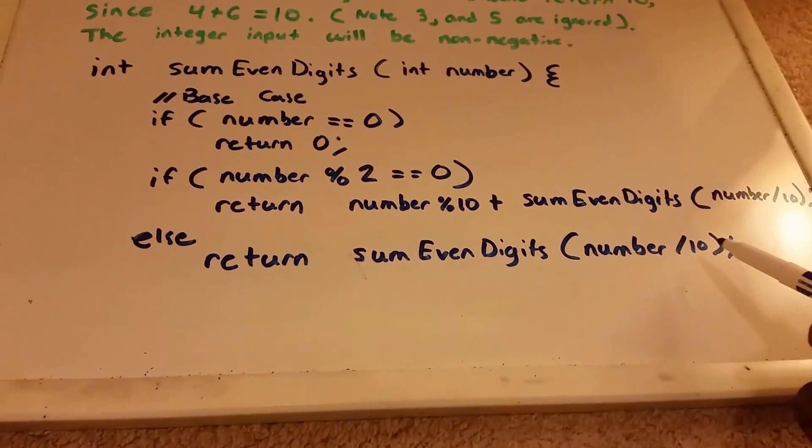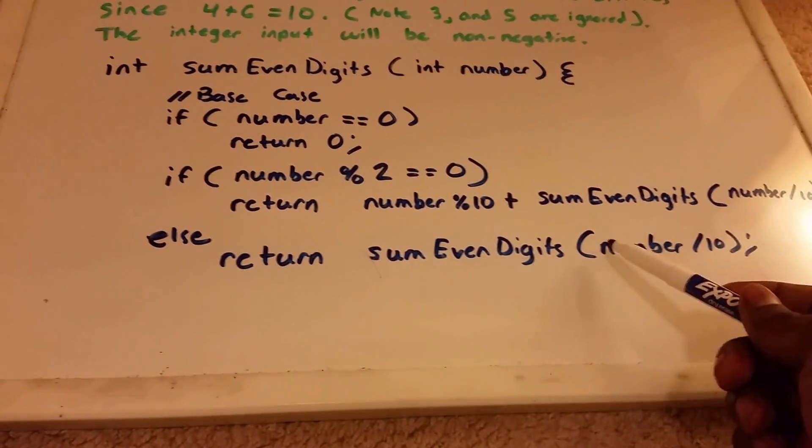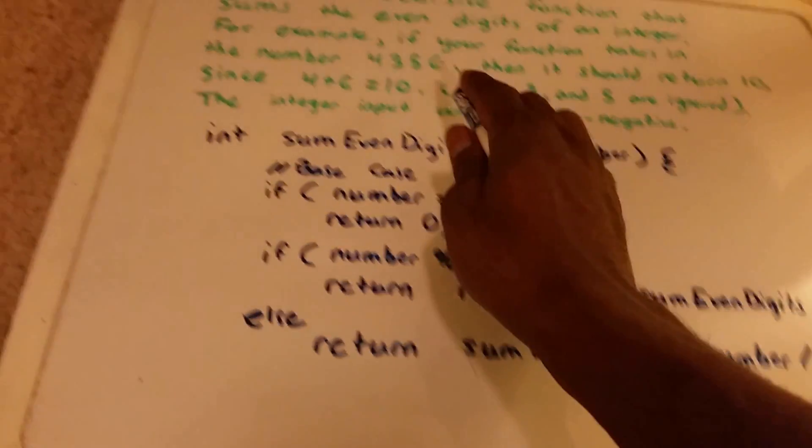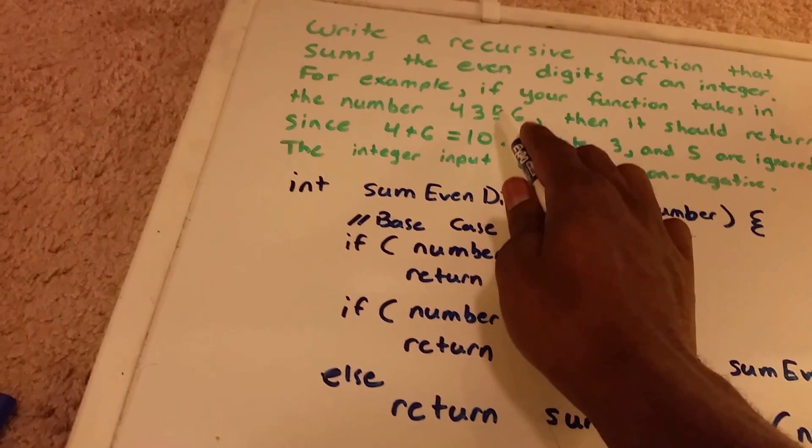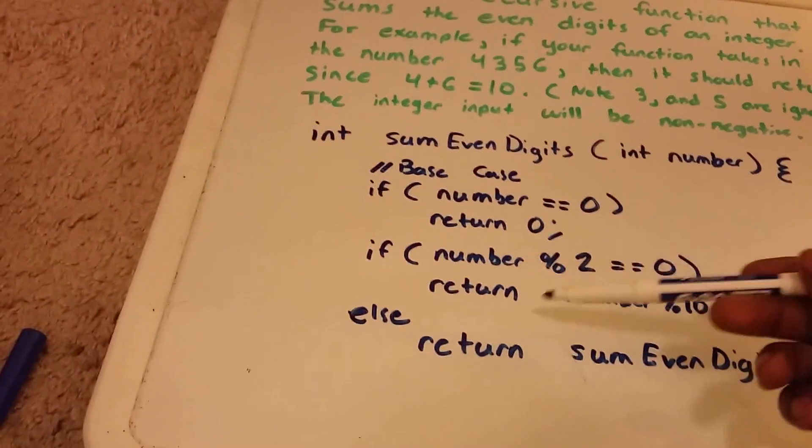Then we're going to want to return SumEvenDigits of number divided by 10. So we're not adding anything now. We're just going through the loop and going to the next number up here. So now we're going to be going to 43 and we're going to go through again.